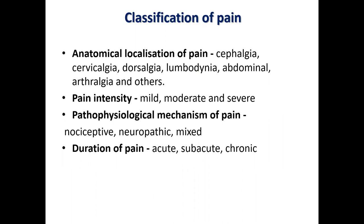To understand pain, we need to divide it into groups. There are many classifications based on different principles. The main principle is anatomical localization — the answer to the question: where does the patient feel the pain? This gives us types like cephalgia, cervicalgia, dorsalgia, lumbodynia, abdominal pain, and so on. Another important classification is by intensity: mild, moderate, and severe pain.